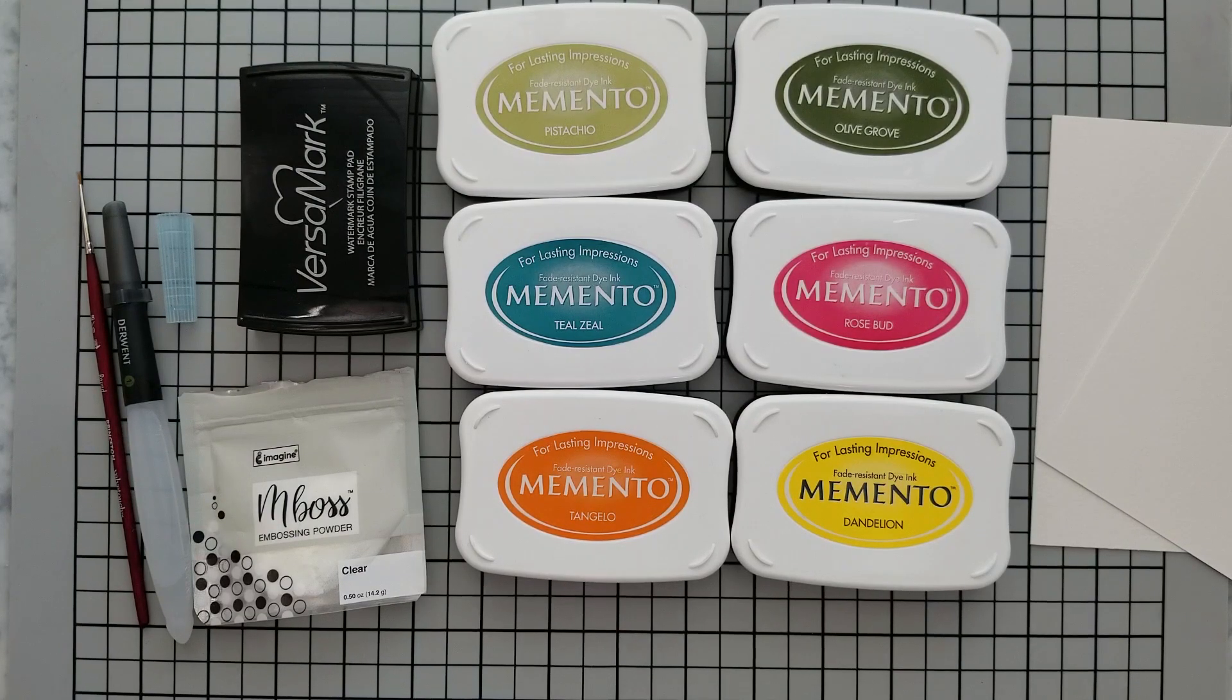Now here are a few of the products we're going to be using. I'm using several Memento inks: Pistachio, Olive Grove, Tangelo, Dandelion, Zeal Teal, Summer Sky, and Rosebud.